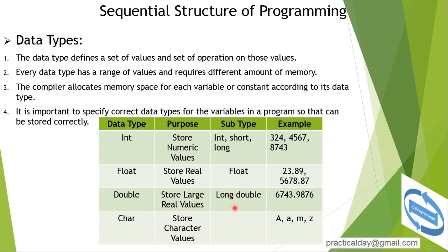Double data type stores large real values. Its subtype is long double. For example, 6743.9739876 — you can see that after the decimal point there are more digits. This refers to floating point precision: double stores more digits after the decimal point compared to float.